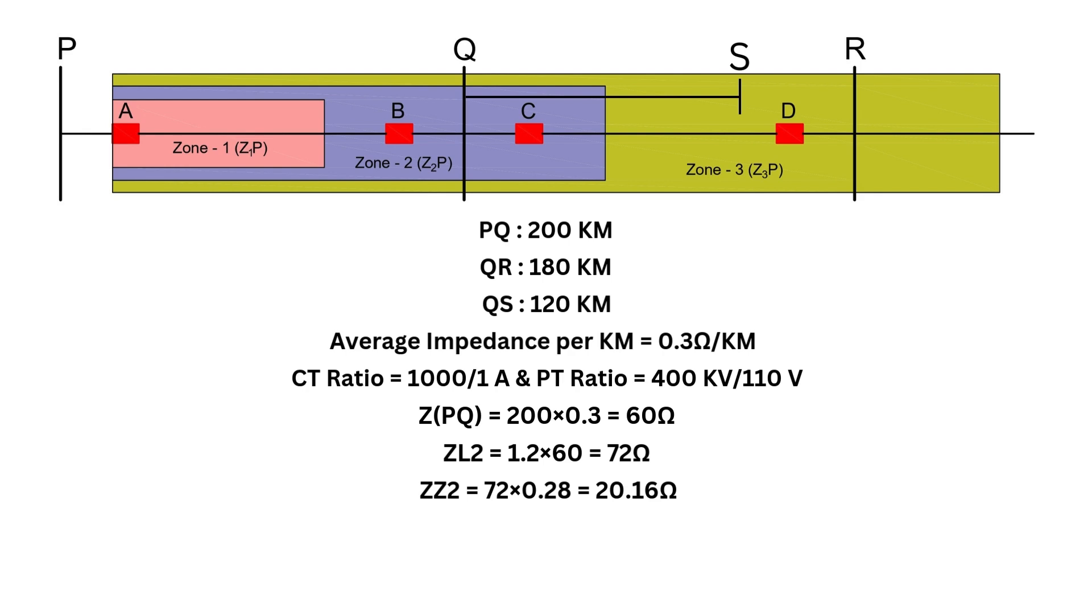And if the relay detects an impedance below this, it will trip the breaker after a 350 millisecond delay. This delay ensures that zone 1 at the remote end has time to act before zone 2 operates.